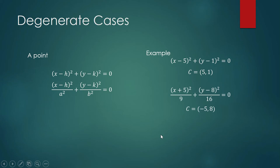It's the same with your ellipse. Again, if this were a regular ellipse, our constant term here should be 1. But when it is 0, that means both terms are 0, and that can only be 0 when x is negative 5 and when y is 8.